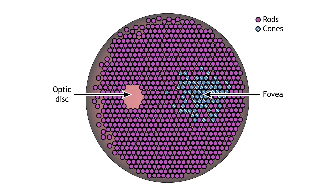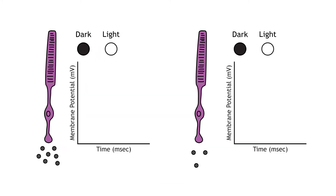The region of the optic disc has no photoreceptors because the axons of the ganglion cells are leaving the retina and forming the optic nerve. The photoreceptors are responsible for sensory transduction in the visual system, converting light into electrical signals in the neurons. For our purposes, to examine the function of the photoreceptors, we will: a) focus on black and white light, not color vision, and b) assume the cells are moving from either an area of dark to an area of light, or vice versa.